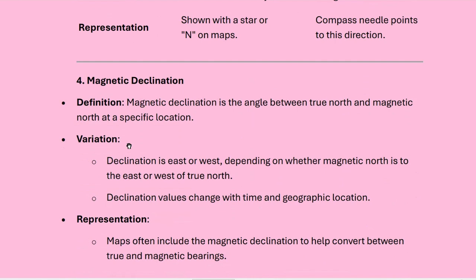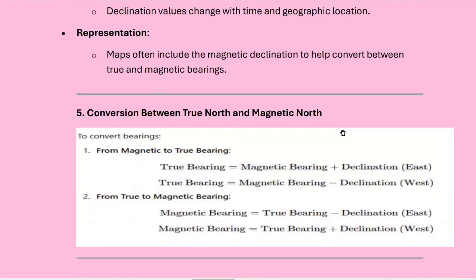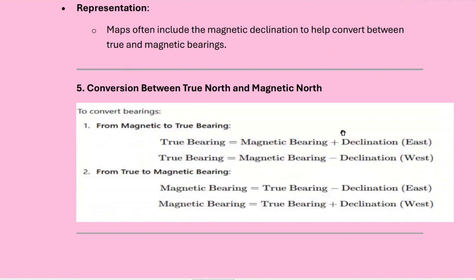What is magnetic declination? Magnetic declination is the angle between true north and magnetic north at a specific time and location. Declination is east or west depending on whether magnetic north is to the east or west of true north. Declination value changes with time and geographical location, and maps often include magnetic declination to help convert between true and magnetic meridians. To convert magnetic bearing to true bearing: true bearing = magnetic bearing + declination (east), or magnetic bearing − declination (west). To convert true bearing to magnetic bearing: magnetic bearing = true bearing − declination (east), or true bearing + declination (west).